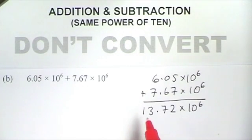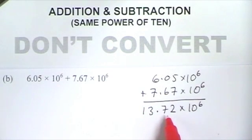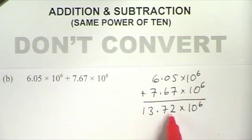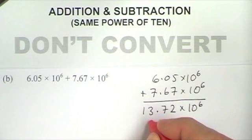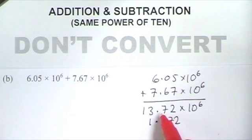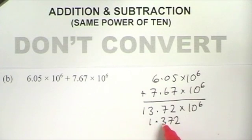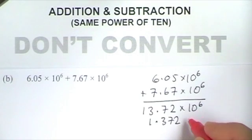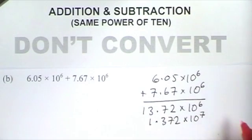However, 13 is not a number between 1 and 10, so this is actually not in standard form. Before I submit my answer, I've got to convert this to standard form, which means instead of 13.72, it's got to be 1.372. I've made this first part a power of 10 smaller, so to keep the whole number the same size, I've got to make the second part a power of 10 bigger. So instead of 10 to the 6, it becomes 10 to the 7. And that's my answer.